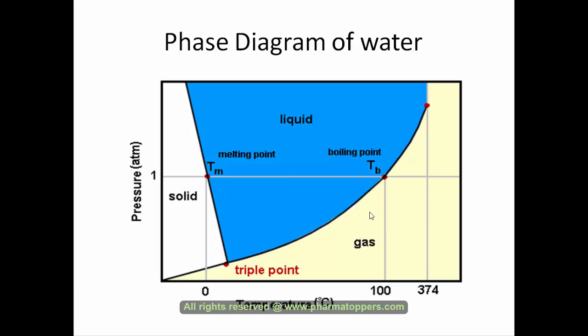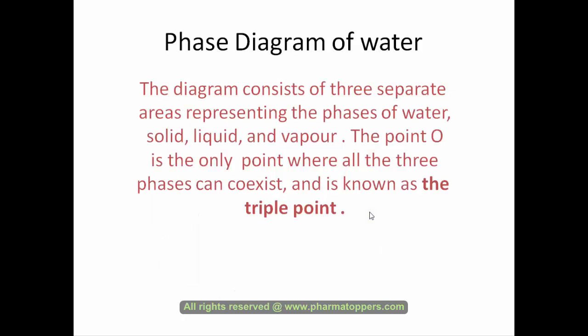And apart from this, at lower pressure — sub-atmospheric pressure — that is the triple point. The triple point can be defined as the area representing the phases of water: solid, liquid, and vapor, meeting at a single point.